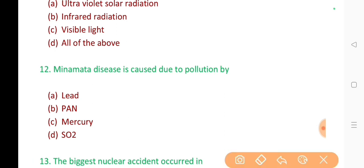12. Minamata disease is caused due to pollution by? The correct answer is option C. Mercury.